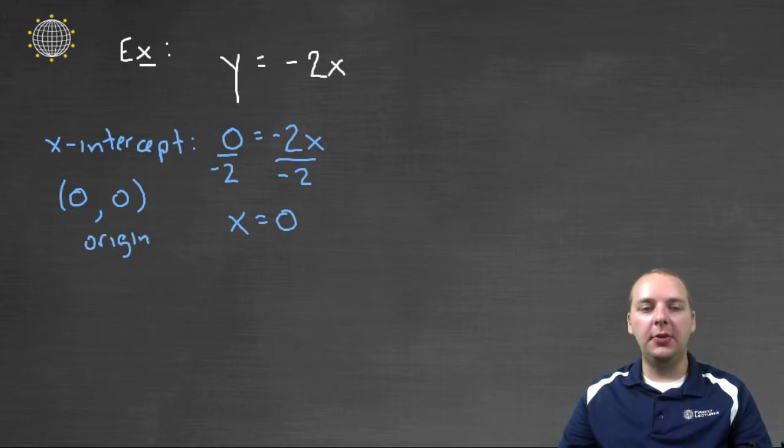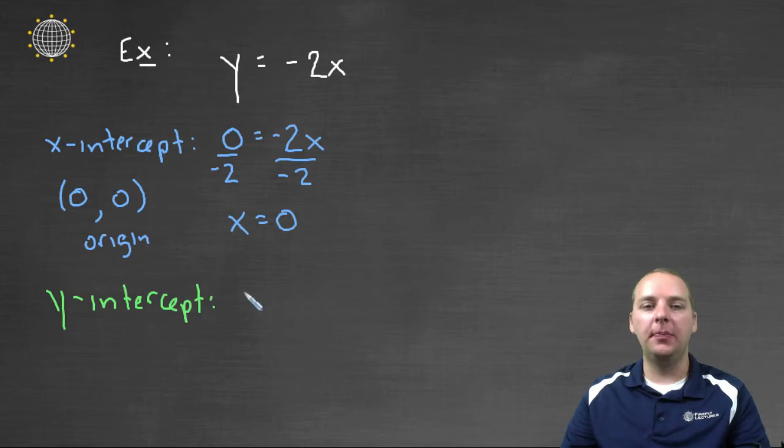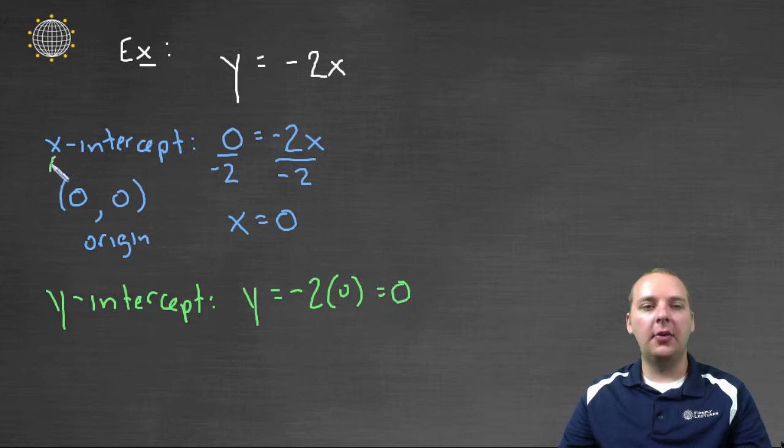And it doesn't take me too long to figure out that the y-intercept will also be at the origin. So if I jot that down real quick, for the y-intercept, I'll let the x be zero. And we'll have y equals negative two times zero, which is obviously zero. And this guy is not only the x-intercept, but it's also the y-intercept. It's both.